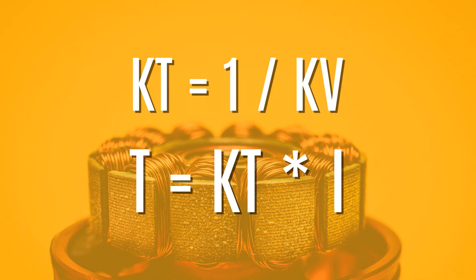KT is the constant that allows you to compute the torque generated by the motor, because torque equals KT times current. It makes sense, because with the same current, the motor with the higher KT number will give you more torque. And of course, with the same current, the higher KV motor will give less torque than the low KV motor. However, there are two problems with this way of thinking.